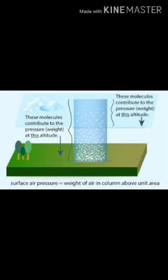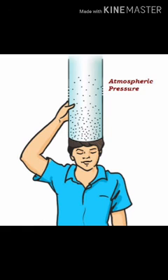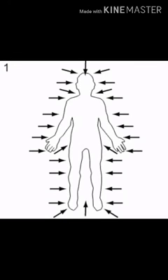Just imagine having such a long column of air on our head — but we still don't feel the pressure. This atmospheric pressure is equivalent to a weight of 225 kg kept on our head, but still we don't get crushed under it. The reason is the pressure inside our body. We have fluids inside our body which also exert pressure, and that pressure is equal to the atmospheric pressure — so we don't feel it. This picture shows that air exerts pressure on our body from all sides.